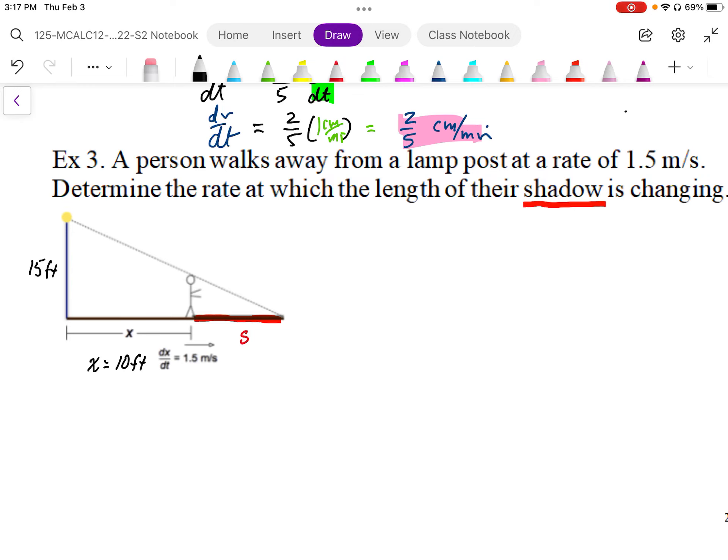And we know that they're walking at a constant rate of 1.5 meters per second. So this person is, we'll say that this person is 6 feet tall. So we have these parameters around this problem.